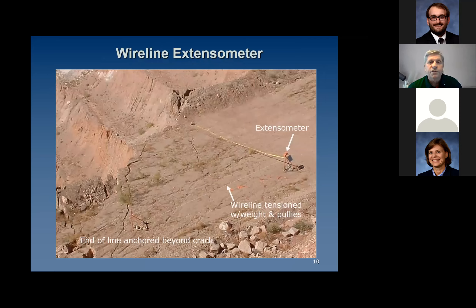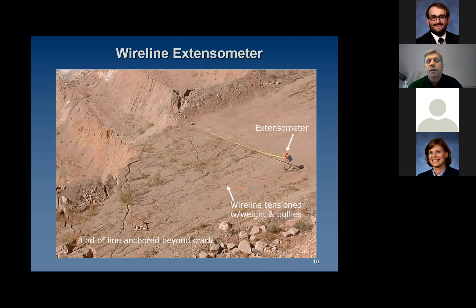A little more sophisticated than the two sticks is the wireline extensometer. It works in a similar fashion, except you're putting an anchor out on the failing ground, as you can see to the left of this slide. A wire is attached back to an extensometer that monitors how the ground is moving. As the slope slides, it will pull that wire out. You can monitor the rate and the amount of displacement. The nice thing about this is now we're getting into electronics, and there can be a communication back to the mine office with warnings that alert levels have been reached.